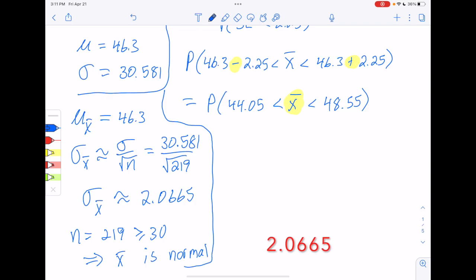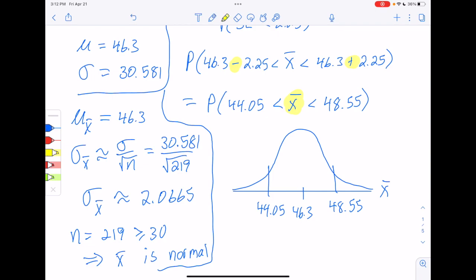So we're going to have a normal distribution for x bar with a mean of 46.3 and a standard deviation of 2.0655. So having that information available allows us to calculate this probability. We can calculate the probability by using the area under a normal curve. So we'll start off drawing the bell shape. In the center, we'll put the mean of x bar, 46.3. Then we'll put our two boundaries on, 44.05 and 48.55. And we want to know this area in the middle right here. Whatever that area is, that's going to be the probability we're looking for.